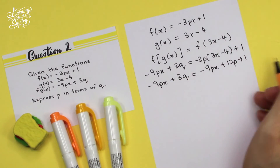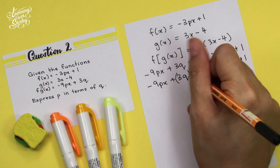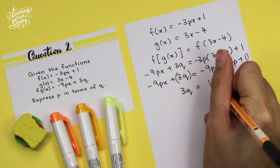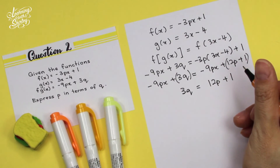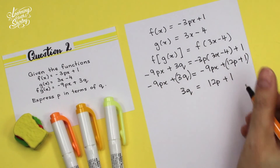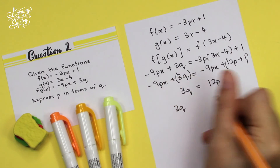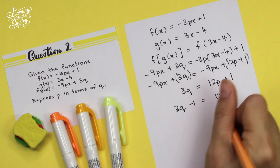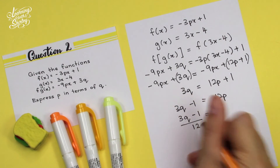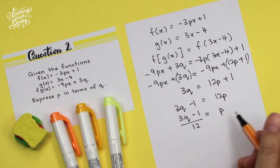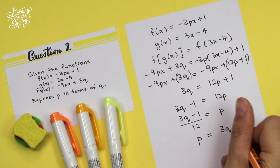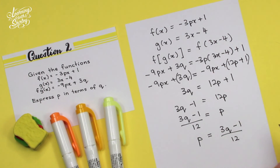Comparing both sides, the difference is 3Q and 12P plus 1, so 3Q = 12P + 1. To express P as the subject, shift positive 1 over: 3Q minus 1 = 12P. Divide by 12: 3Q minus 1 over 12 = P. Swapping so P is on the left-hand side, P = (3Q minus 1) / 12. That is the answer.